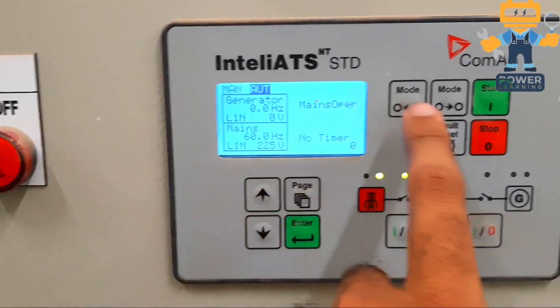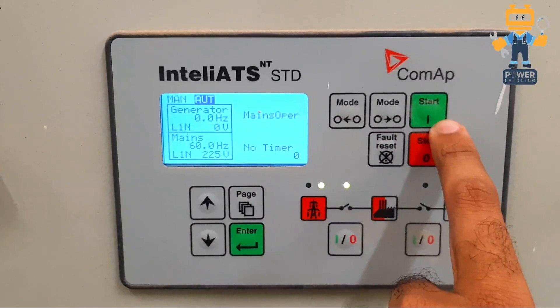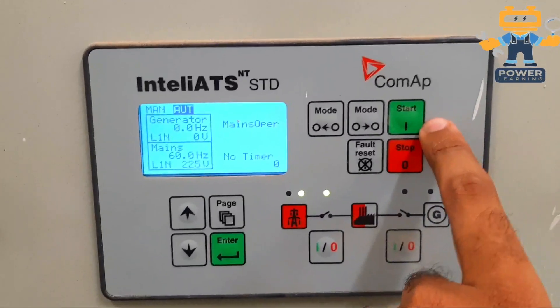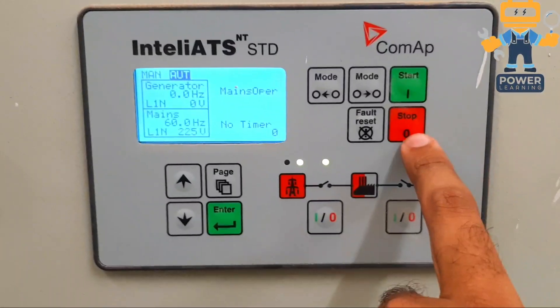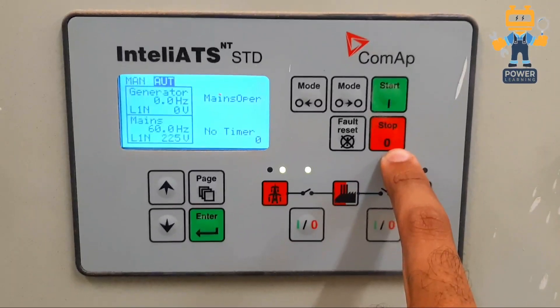This is manual mode and auto mode. You can select this mode by pressing these two buttons. Here we have start button, stop button, and fault reset. If you want to start manually, press this button, and press this if you want to stop. It will stop the generator.